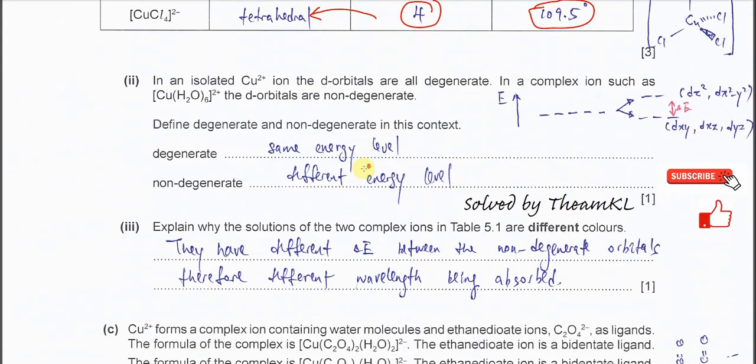Define degenerate and non-degenerate in this context. Very easy. Degenerate means, for example, these five D orbitals are at the same energy level. So this is degenerate.